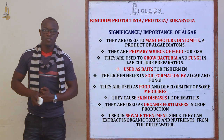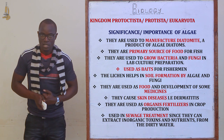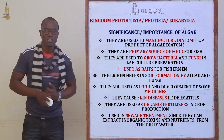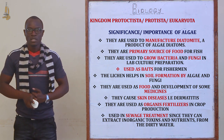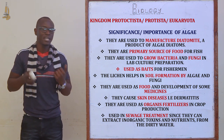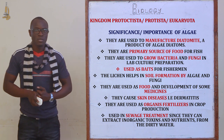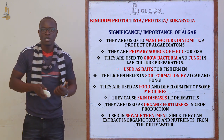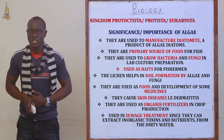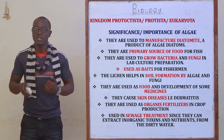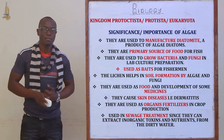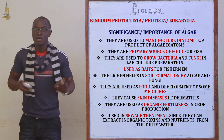So what are the significance of algae? First, diatomite is a product of algae diatoms — it originates from algae diatoms. Algae are also a primary source of food for fish living in aquatic environments. They also assist in lab culture preparation to grow different bacteria and fungi for testing of different pathogens. They are also used as bait for fishermen and can be purchased commercially.